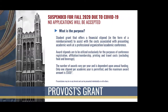The purpose of the Provost Grant is that it's a student grant offering a financial stipend to help with the costs associated with presenting academic work or research at a professional organization or conference. These stipends are to be utilized exclusively for conference registration, affiliation or membership, printing, and travel costs — excluding food and beverage. The number of awards varies per year, dependent upon annual funding, and there is only one stipend per academic year permitted with a maximum award of $500 per student.